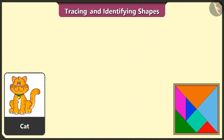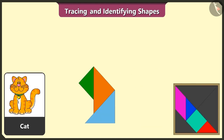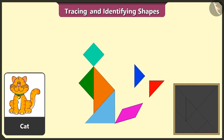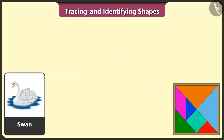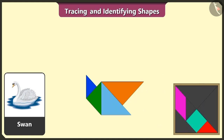This is a cat. Let's make a cat using three triangles, one quadrilateral, one square, and the remaining two triangles. See, the cat is ready. This is a swan. Now we will make a swan using four triangles, one square.